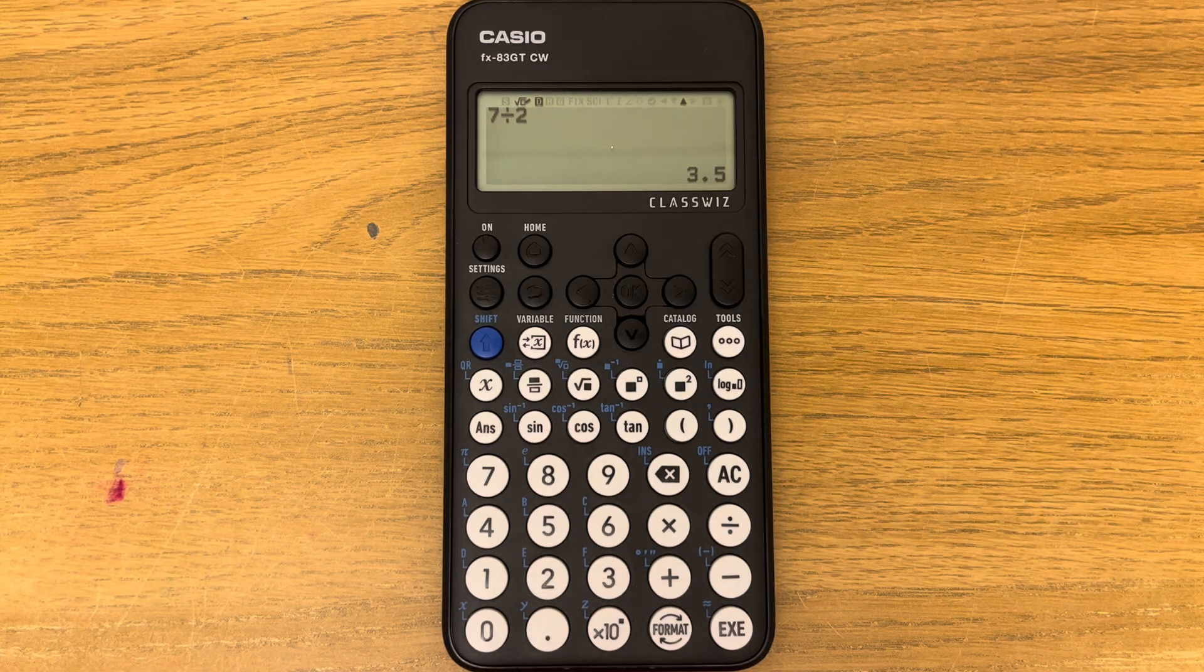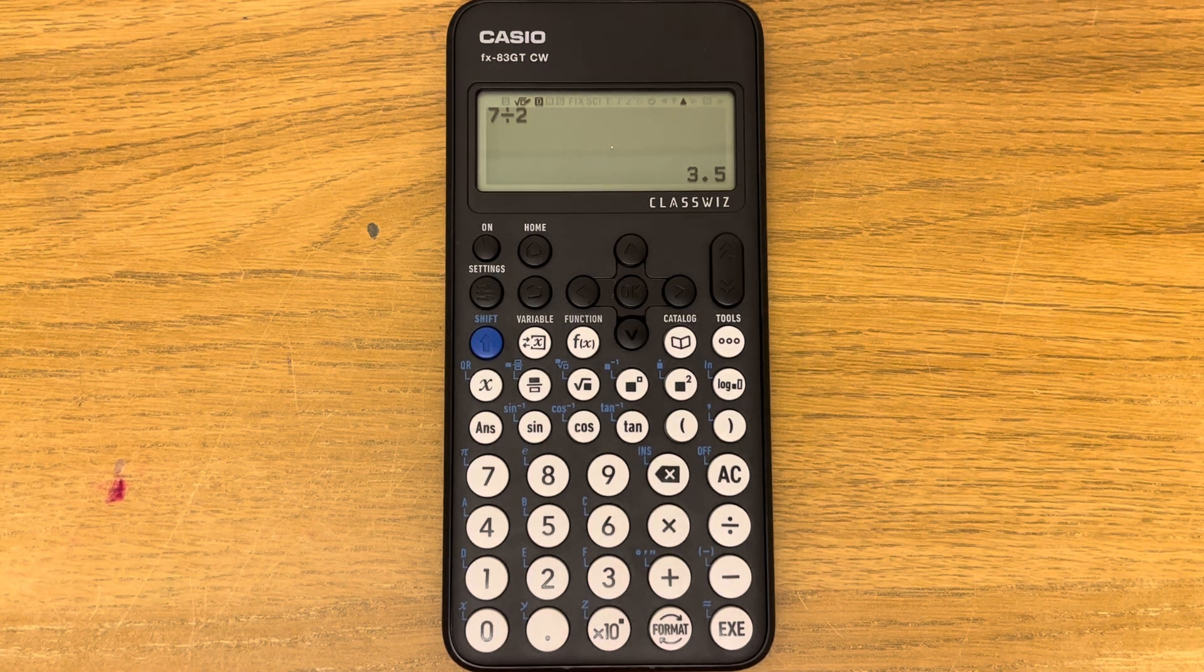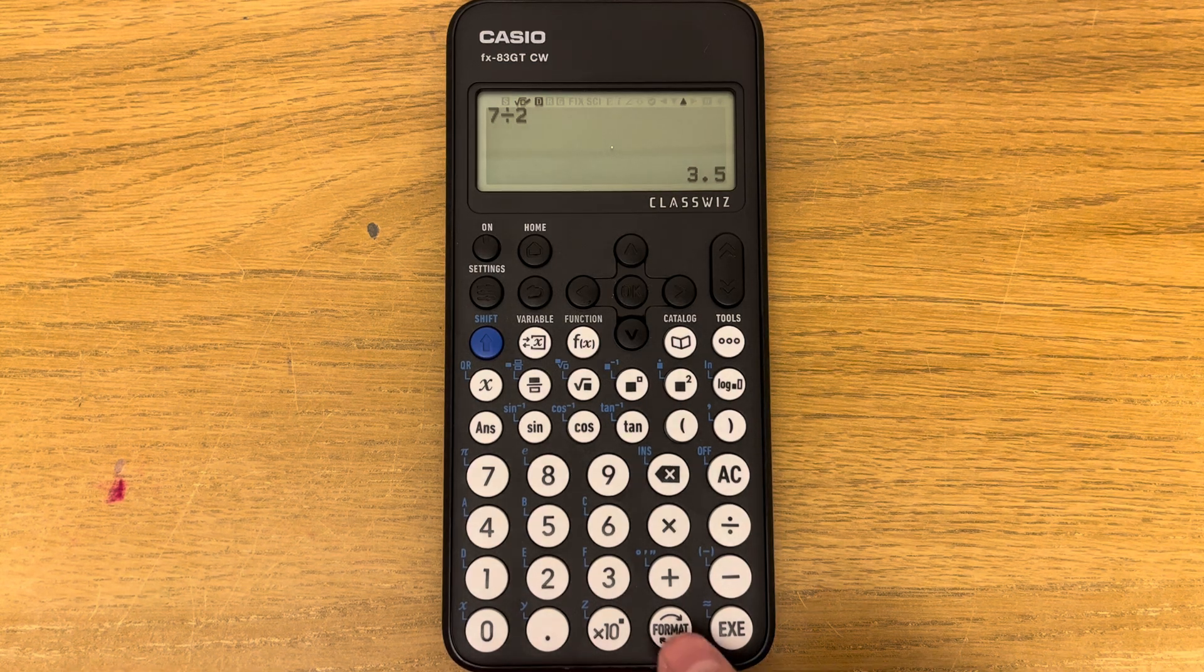If you did want it as a fraction though still, you could press format and press execute and it comes back as a fraction.